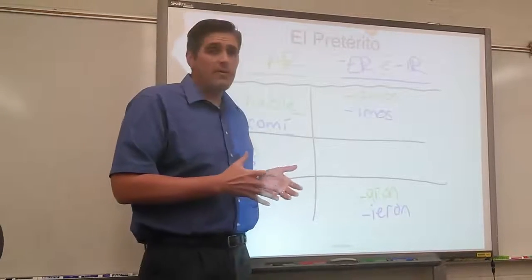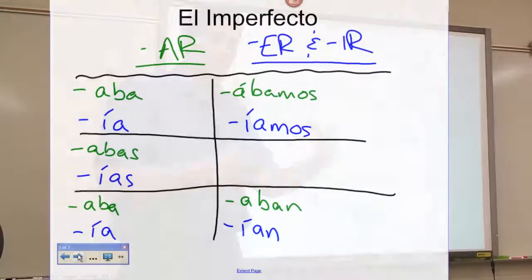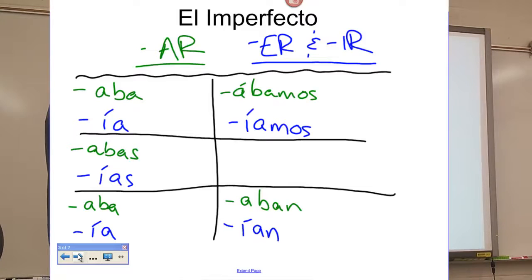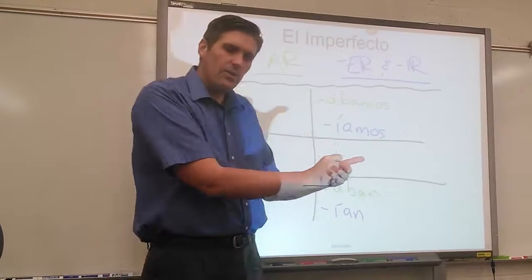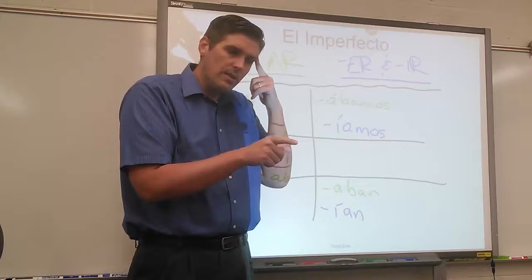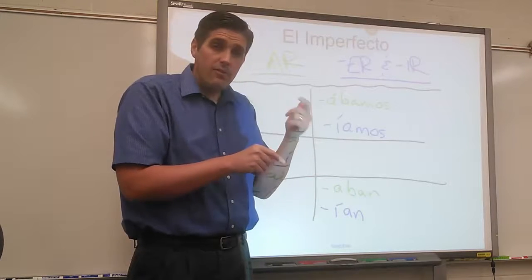Then we have the imperfect. Remember, the imperfect is for actions that used to be happening in the past, things that were going on in the past. AR verbs use the -aba endings: yo hablaba, tú hablabas, él hablaba, nosotros hablábamos, ellos hablaban. ER and IR verbs: yo comía, tú comías, él comía. One trick to figure out the difference: if you're filling in a blank, ask yourself, can I say 'I was doing this' or 'I used to do this'? If you can, it's probably imperfect.